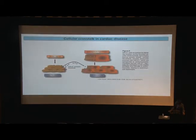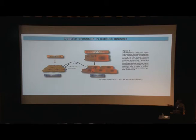Now I will switch to exosomes. We are interested in how HUR, which is in the macrophages, gets transferred to other cell types and how it could regulate their function. As one example in the literature, cardiac fibroblasts secrete exosomes enriched in microRNA-21, which can affect cardiomyocyte function and contribute to cardiac hypertrophy.